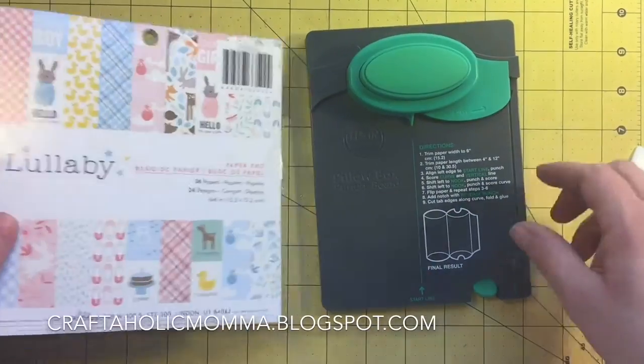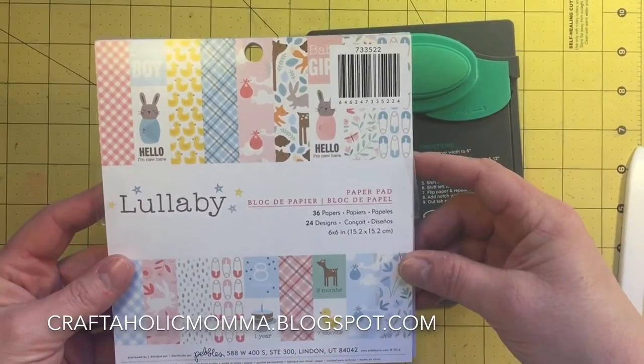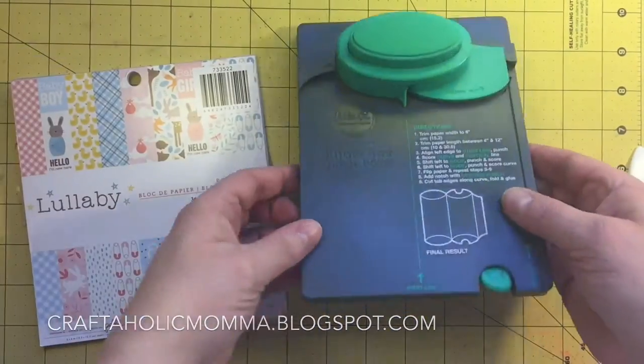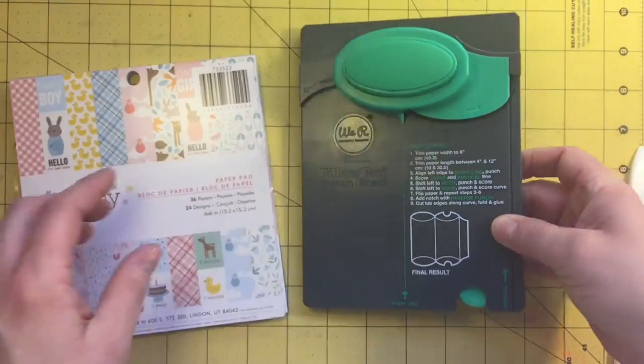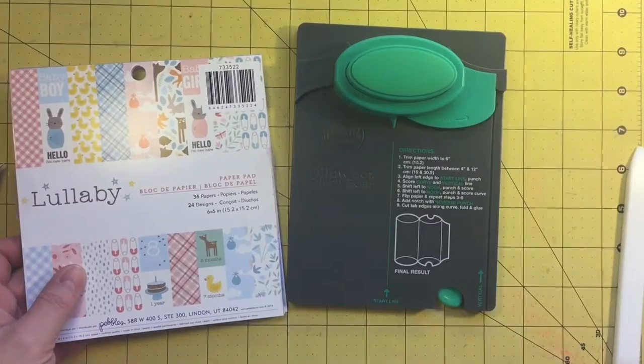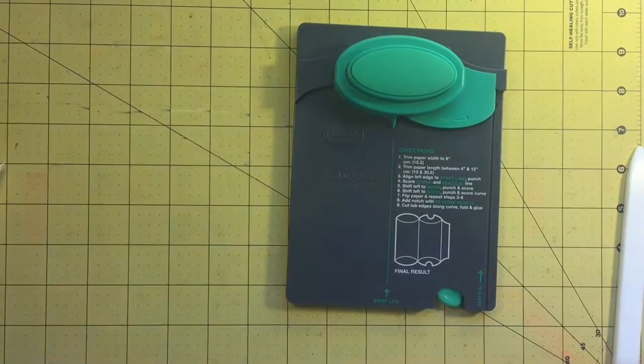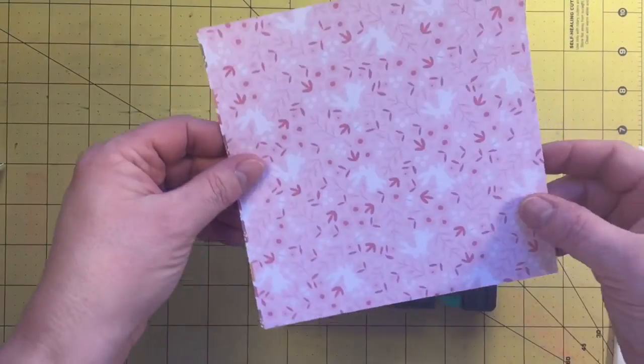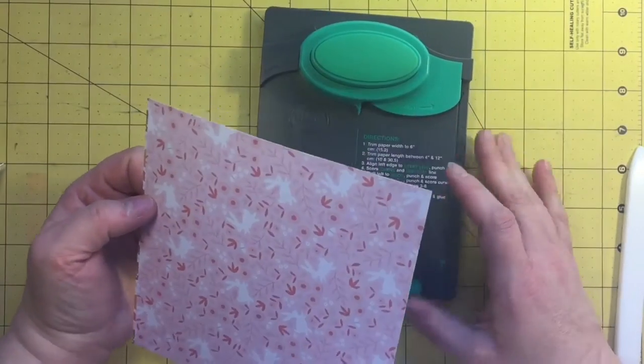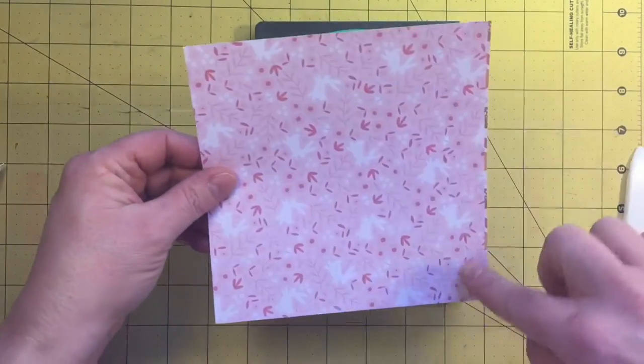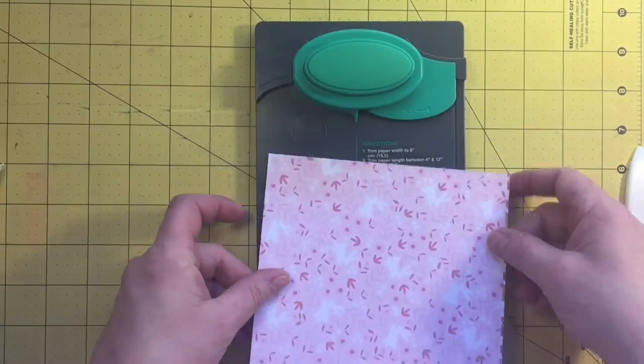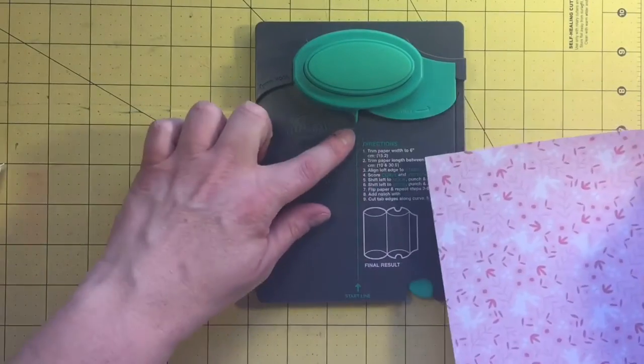Hi, it's Stacy here with craftaholicmama.blogspot.com and today I'm going to show you how to make a pillow box from the We Are Memory Keepers pillow box punch board. I'm going to use this lullaby paper pad that I'm working on right now. One of the measurements says it needs to be at 6 inches and the other measurement can be 4 to 12 inches long. So I'm going to just use a 6 by 6 inch piece of paper.